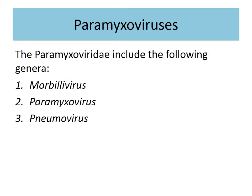Paramyxovirus has three genera: Morbillivirus, Paramyxovirus, and Pneumovirus — 'pneumo' tells you it affects the lungs. Human pathogens are our focus, as opposed to viruses affecting crops or animals in agriculture and veterinary fields.